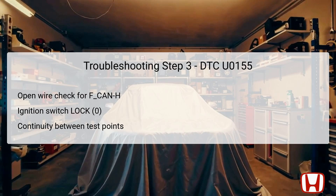The specific test points include ECM connector A at pin number 3 and gauge control module connector at pin number 19. If continuity is detected, it indicates that the F-CAN H wire is intact, suggesting the fault lies elsewhere. If continuity is absent, you'll need to repair the open wire located between the ECM and the gauge control module.